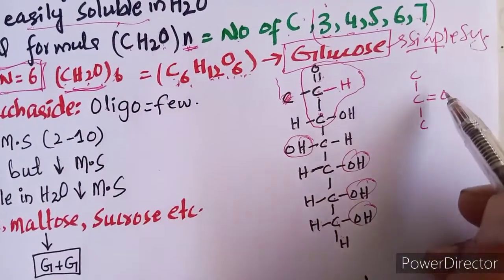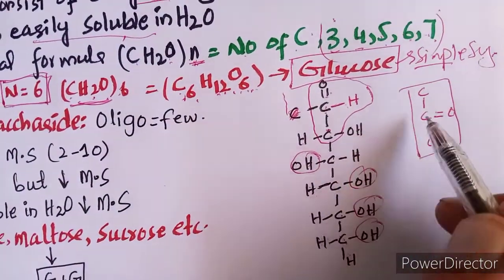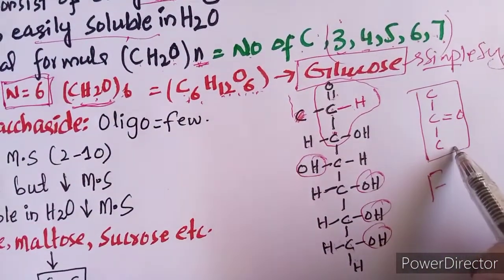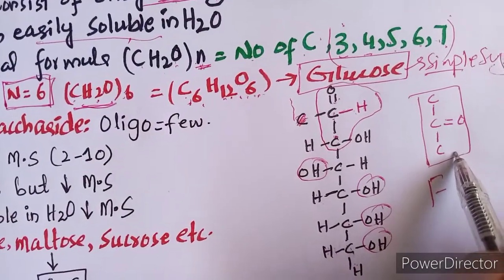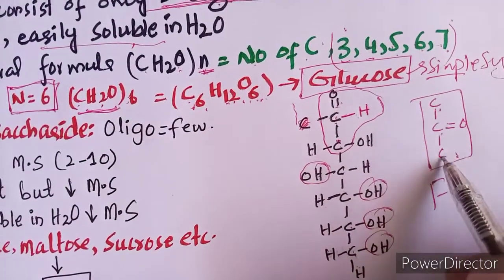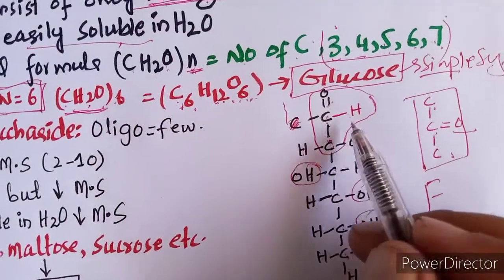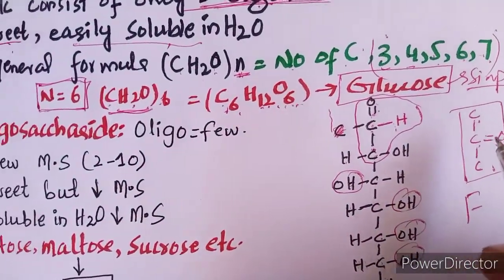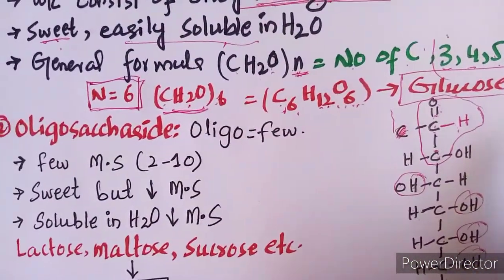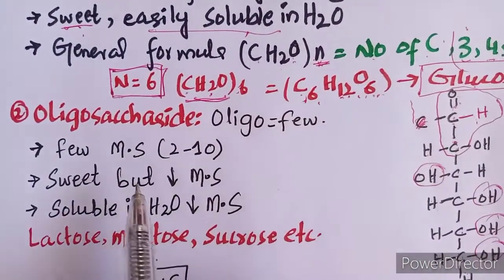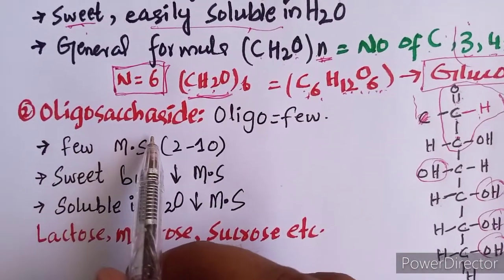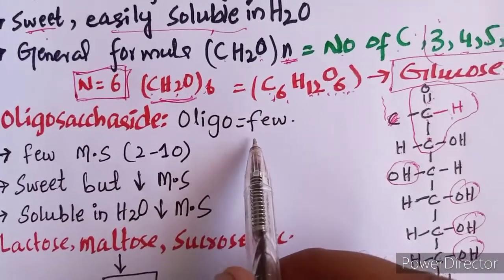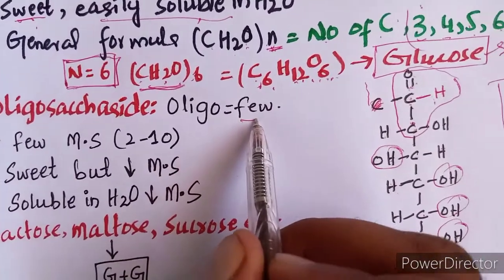Another example is fructose. In fructose, there is a ketone functional group — carbon double bonded to oxygen with carbons on both sides. This is the ketone functional group. So fructose is a monosaccharide with a ketone group. The second group of carbohydrates is oligosaccharides. Oligo means 'few.'